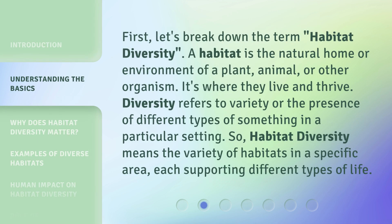First, let's break down the term Habitat Diversity. A habitat is the natural home or environment of a plant, animal, or other organism — it's where they live and thrive. Diversity refers to variety, or the presence of different types of something in a particular setting. So, habitat diversity means the variety of habitats in a specific area, each supporting different types of life.